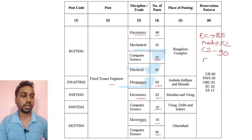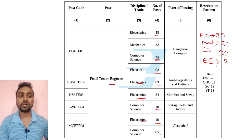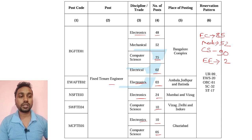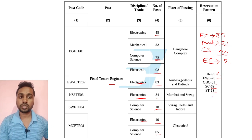For Electrical, there are only 2 posts. Category-wise, the total is: Unreserved 99, EWS 20, OBC 61, SC 32, and ST 17 posts for this BEL Aptitude exam.